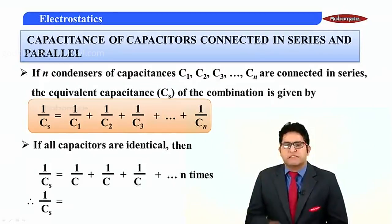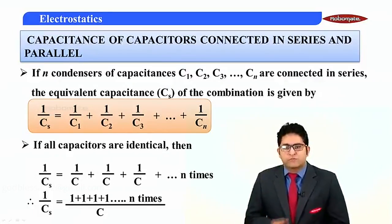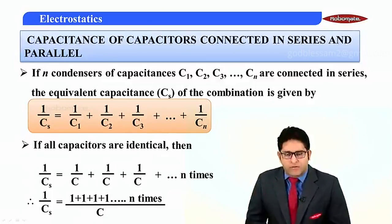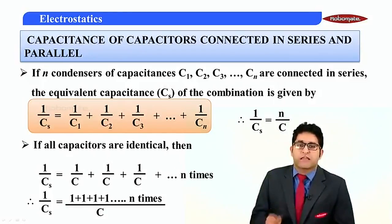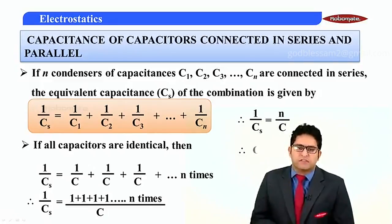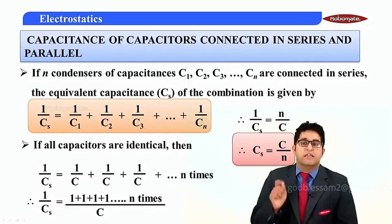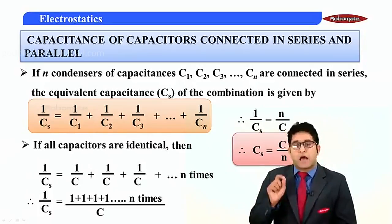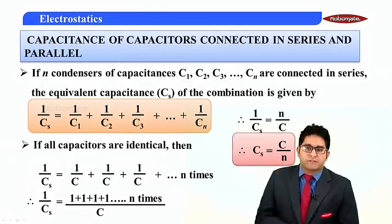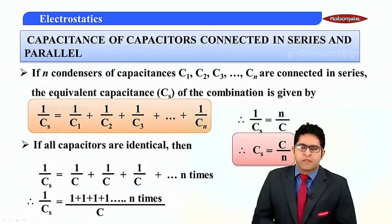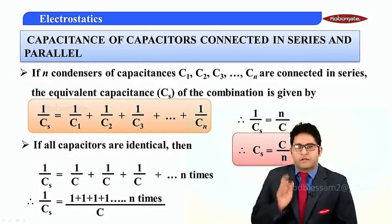So 1/Cs = (1 + 1 + 1 + ... N times) / C = N/C. Taking the reciprocal, we get Cs = C/N, where N is the number of capacitors connected in series. So if N identical capacitors are connected in series, the equivalent capacitance is C/N. For example, connecting 4 such capacitors gives C/4, and connecting 100 capacitors of value C gives a resultant capacitance of C/100.